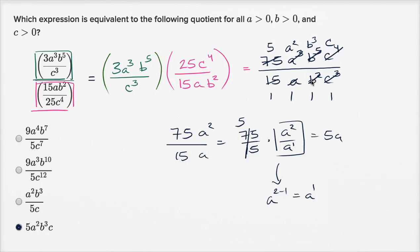Similarly, b to the fifth divided by b squared, that's going to be b to the five minus two power, which is b to the third. c to the fourth minus c to the third, well, that's going to be c to the four minus three power, which is c to the first power, which is this choice right here.